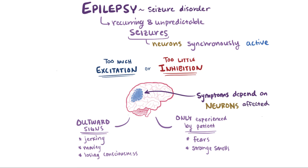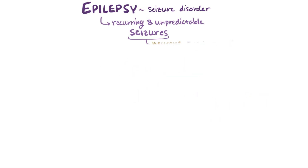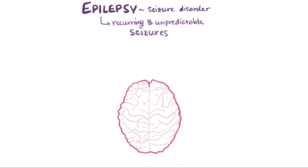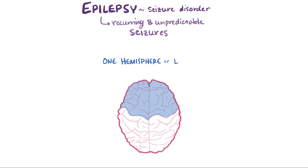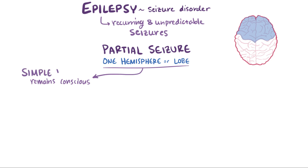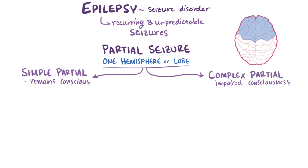People with epilepsy experience recurring episodes of some form of seizures, and we can start grouping them by the region of the brain that's affected. When the affected area is limited to one hemisphere or one half of the brain, or sometimes even a smaller area like a single lobe, we call it a partial or focal seizure. These seizures can be subcategorized by whether someone remains conscious — called a simple partial seizure — or whether someone has impaired consciousness, called a complex partial seizure.